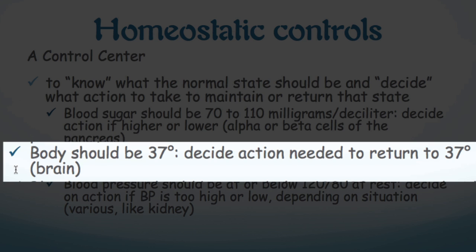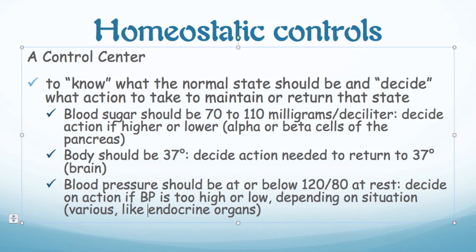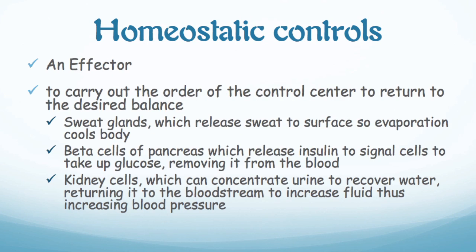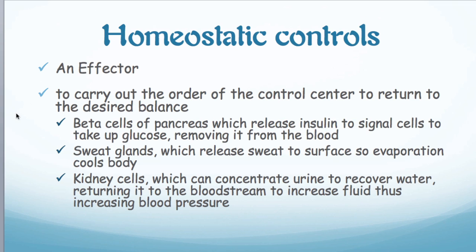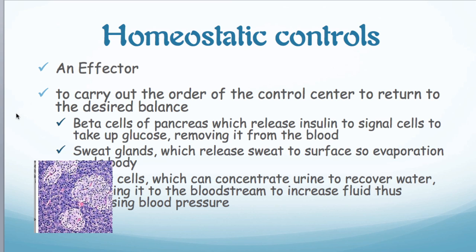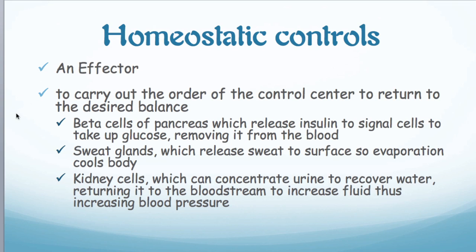If the body veers too much from 37 degrees Celsius, the brain will be involved as a control center to bring that back in line. If blood pressure should change — say it went too low — we might have an endocrine organ acting as a control center. The control center is going to send a command to the effector. The effector is the part that can carry out this order and actually make something change — make things return to the desired balance. For instance, beta cells of the pancreas can release insulin, which will tell other cells to take glucose up out of the bloodstream, thereby lowering blood glucose levels.